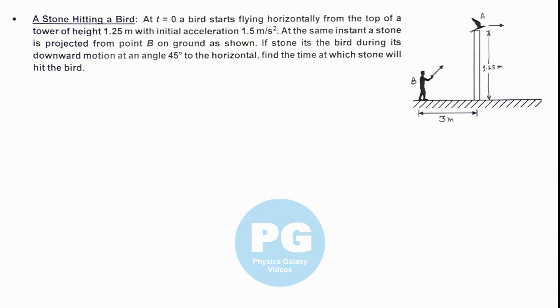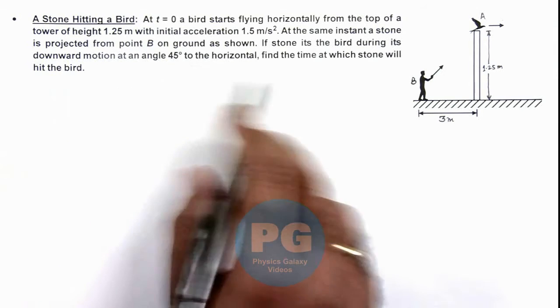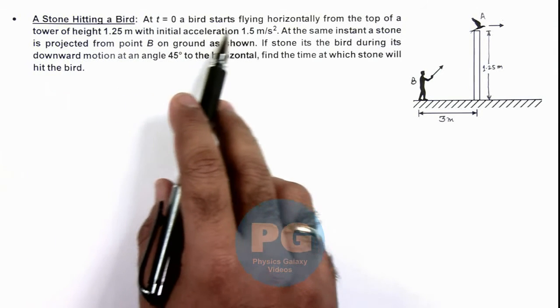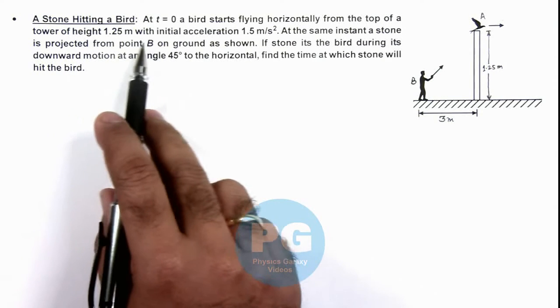In this illustration, we'll discuss a situation when a stone hits a bird. We are given that at t equal to zero, a bird starts flying horizontally from the top of a tower of height 1.25 meter.